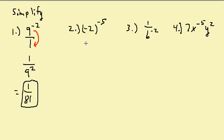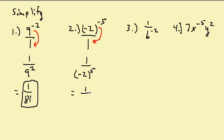Let's take a look at this one — look at this as being over 1. I want to make the exponent positive, so I'm going to move negative 2 to the negative 5 down to the denominator. That gives me 1 over negative 2 raised to the 5th. It doesn't change the sign of the negative 2; it only changes the sign of the exponent. So this gives me 1 over negative 32.